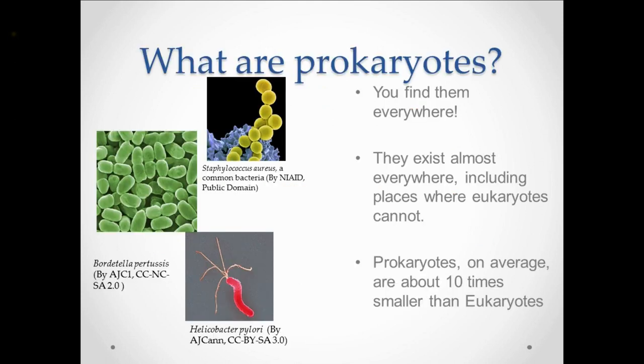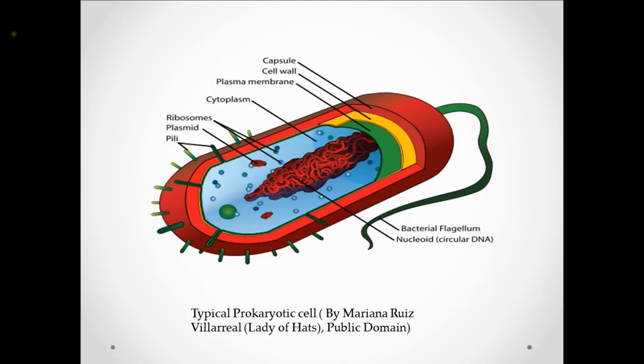So what are prokaryotes? Prokaryotes are ubiquitous, meaning that they are going to be found everywhere. They're going to be found in large numbers and in even those places in which other organisms can't live. Prokaryotes are tiny. On average they're about 10 times smaller than a eukaryotic cell. Prokaryotes are cellular in nature and although they may seem simple in structure, they're actually quite complex.